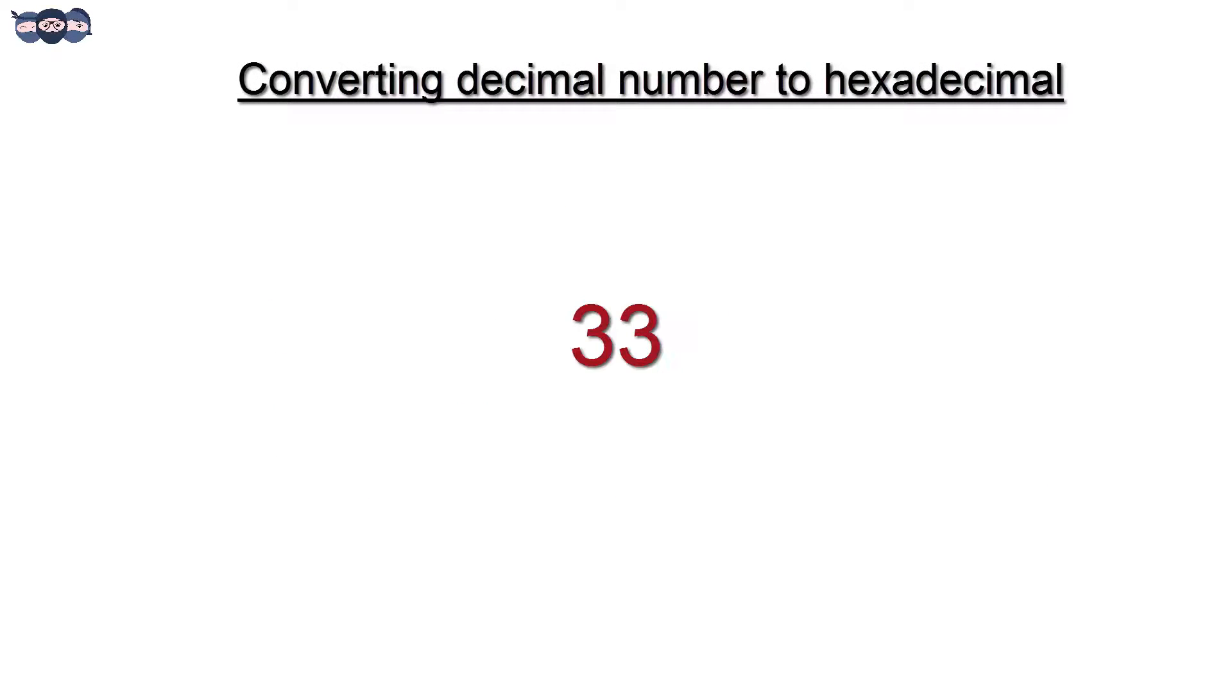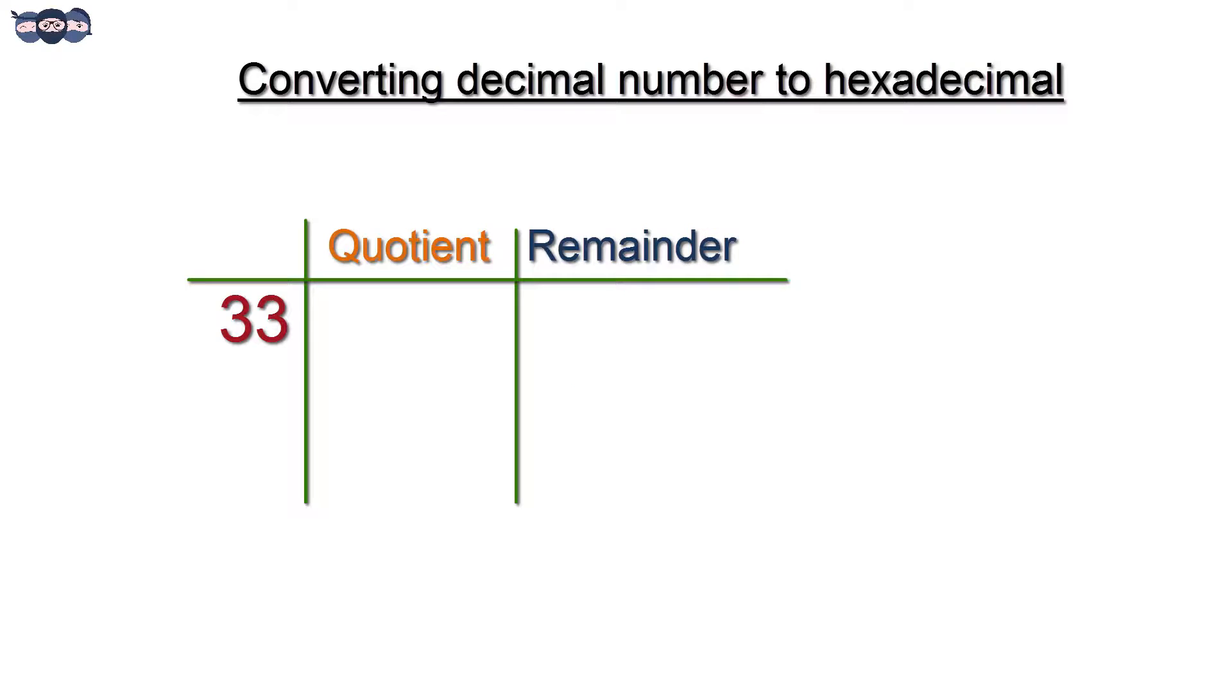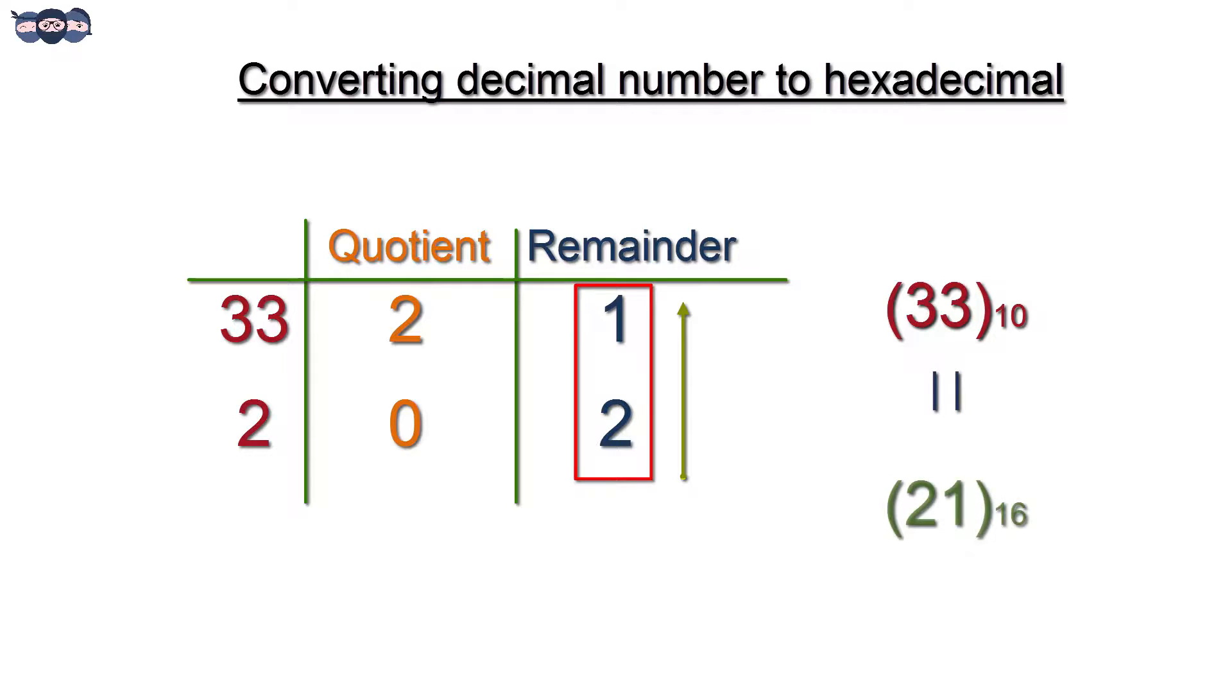The same number will help us understand conversion from decimal to hexadecimal system. The base for hexadecimal system is 16, so the number is divided by 16. In this manner we get 21 as the hexadecimal equivalent for number 33.